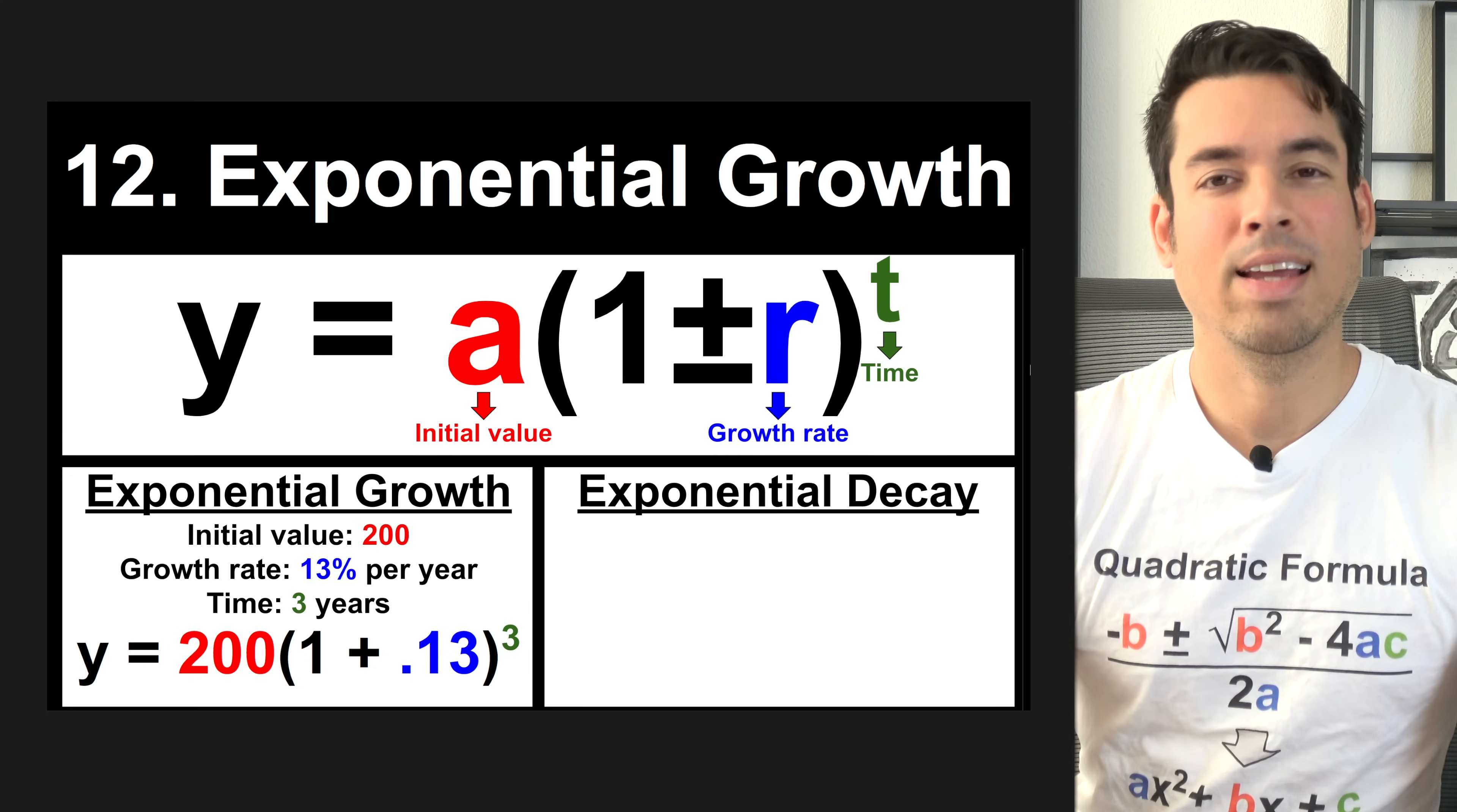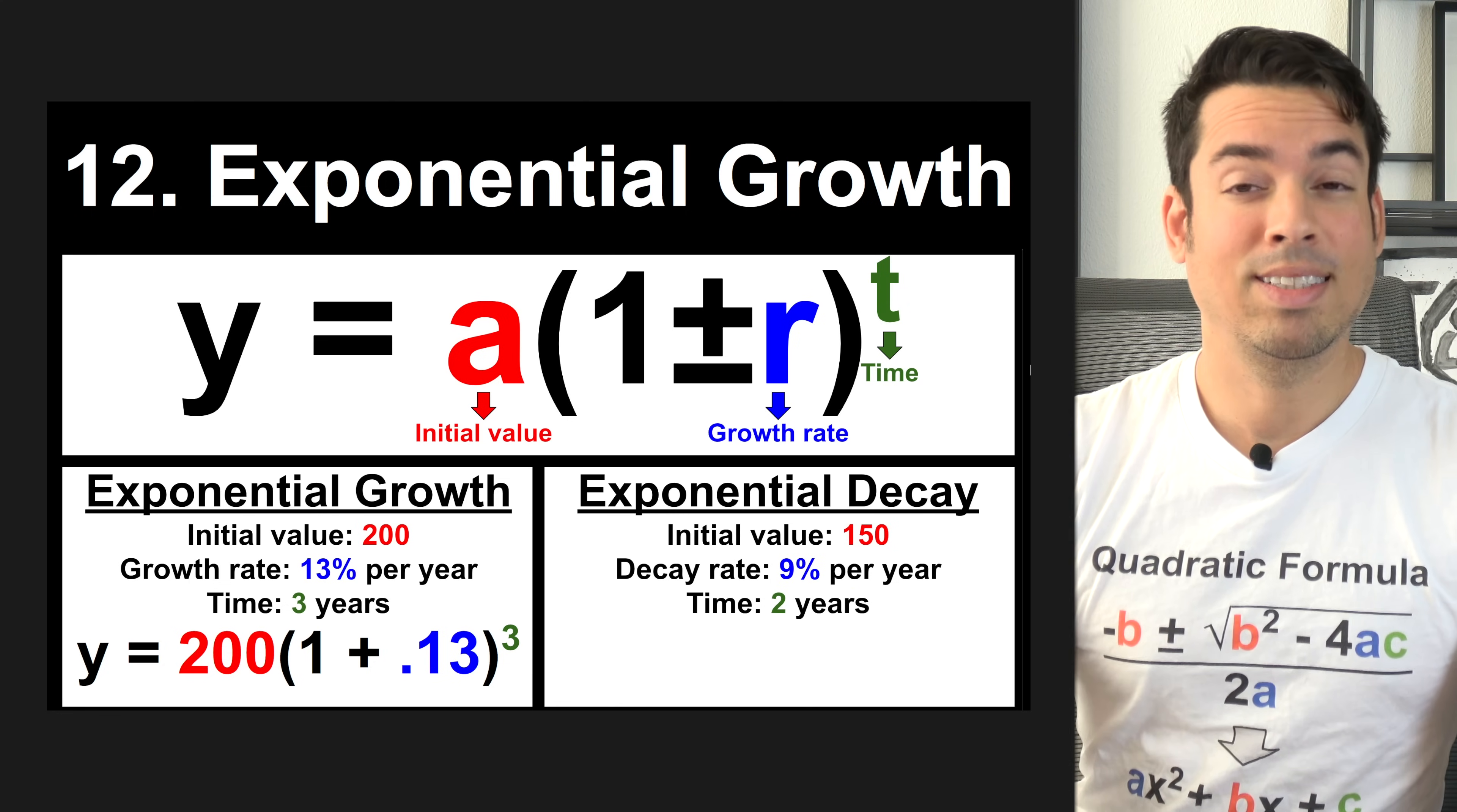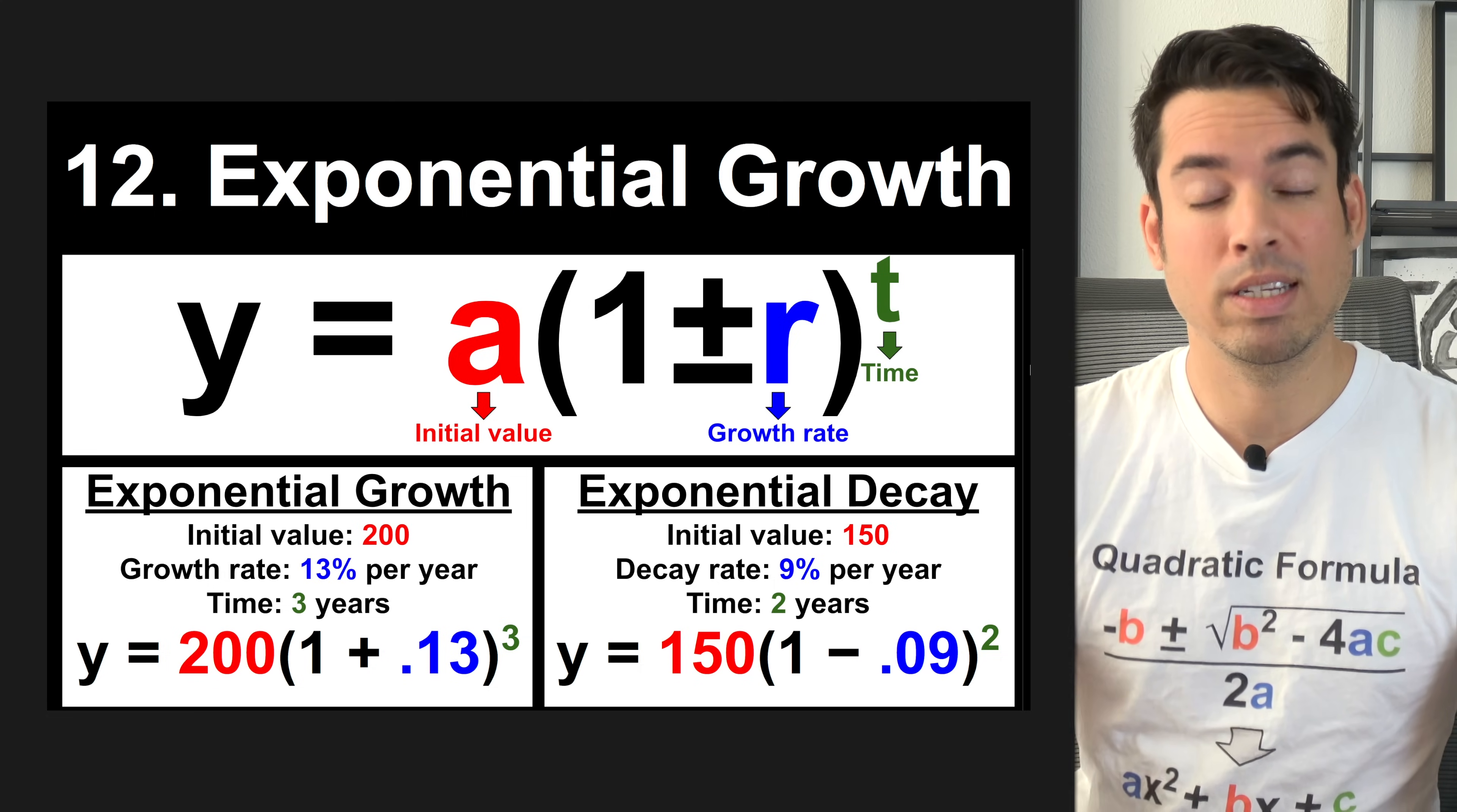Next, let's look at exponential decay. Here we have an initial value of 150, a decay rate of 9% over a time span of two years. When we're talking decay, it's all the same when we plug in the values, except now we're subtracting that percentage. If this were simplified, what you'd see inside would be 0.91.